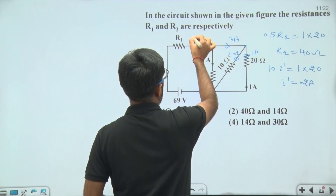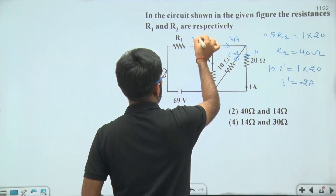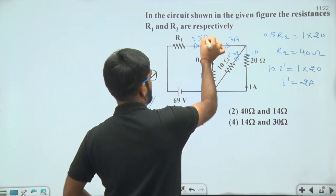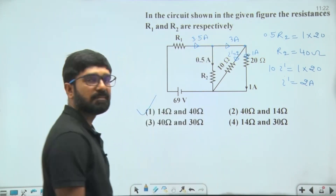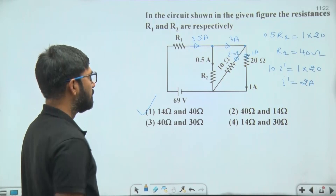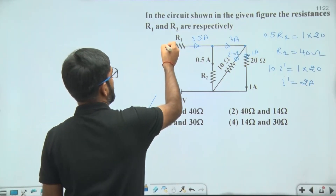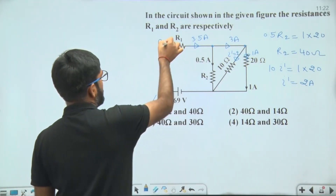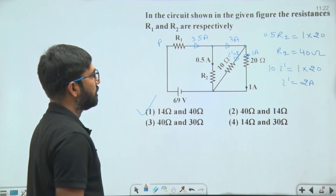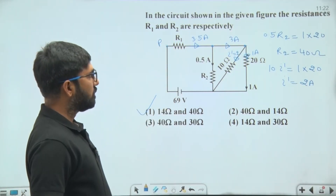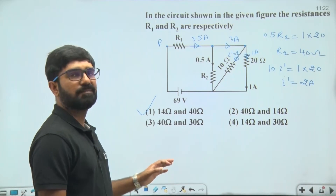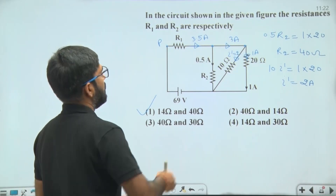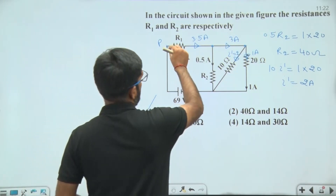The total outgoing current at this junction is 3.5 ampere, so the total incoming current will also be 3.5 ampere. Now consider this point as P and use KVL in any closed loop — we will move on the outer loop.